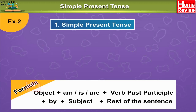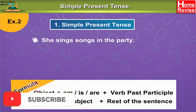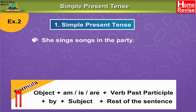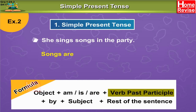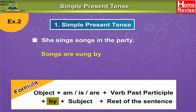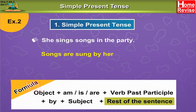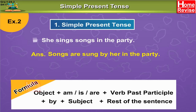Let's take one more example to understand it better. She sings songs in the party. First, identify the object by asking the question: what does she sing? Songs. So songs is the object. The passive voice sentence begins with 'songs' — to be form of the verb for present tense is 'are' — past participle of sing is 'sung' — by her. Her is the objective case of the subject she, and then the rest of the sentence: in the party. So the answer is: songs are sung by her in the party.